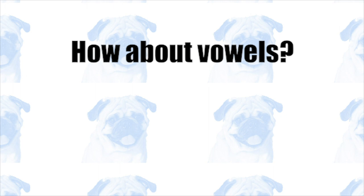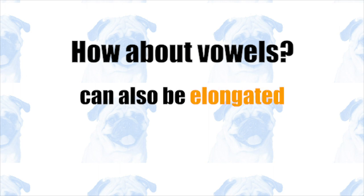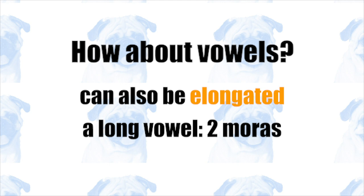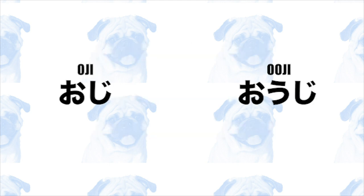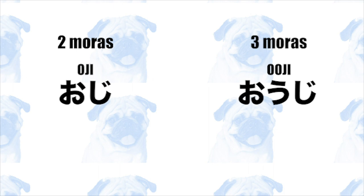Consonants are not the only type of sounds that can be elongated. Vowels can also become longer, and longer vowels also take two moras. For example, "oji" and "ōji" differ with respect to the length of the initial vowel. "Oji" has a short vowel, so this word contains two moras. "Ōji", on the other hand, has a long vowel, and therefore contains three moras.